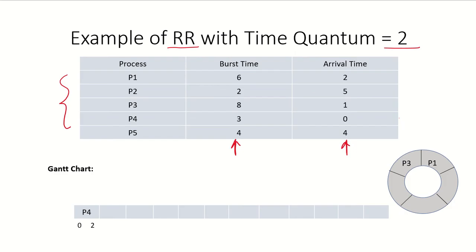At time zero we have only one process in the system, which is P4. It enters the ready queue and the scheduler gives the processor to P4. P4 starts at time zero and ends at time two, running for two time units, leaving a remaining burst time of one.